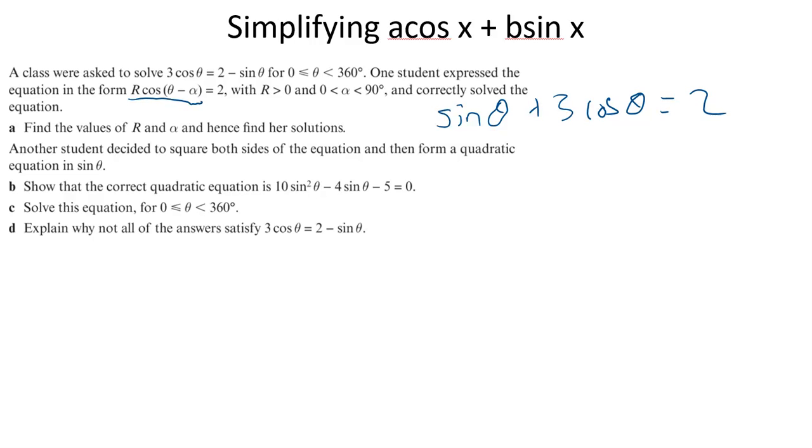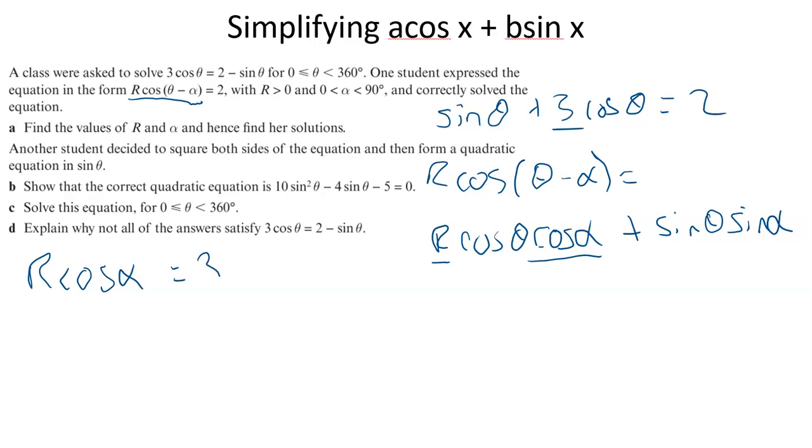Rearrange it: sin(θ) + 3cos(θ) equals 2. Now expand R*cos(θ - α), which becomes R*cos(θ)*cos(α) plus R*sin(θ)*sin(α). The minus there makes that sine a plus, which it is. So R*cos(α) should equal 3 and R*sin(α) should equal 1.